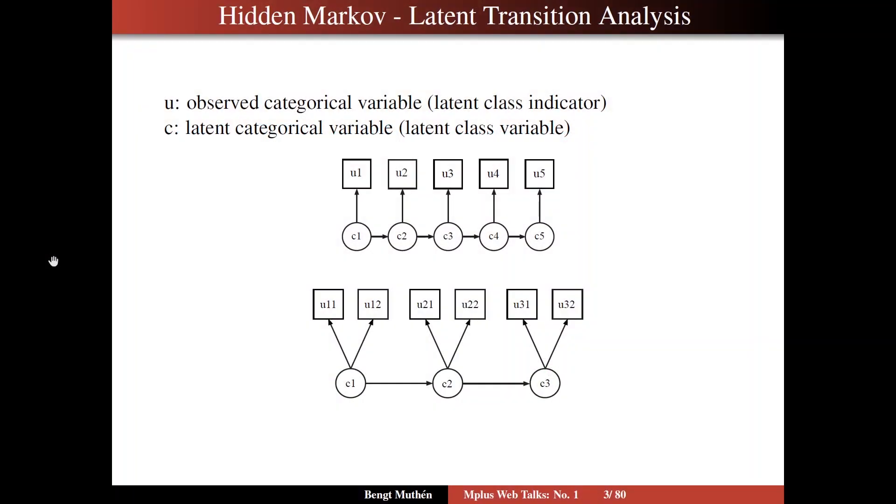On slide 3, we are going to turn to hidden Markov and latent transition analysis. These are two models for longitudinal data where the interest is in states changing over time, that is categorical variables changing over time.